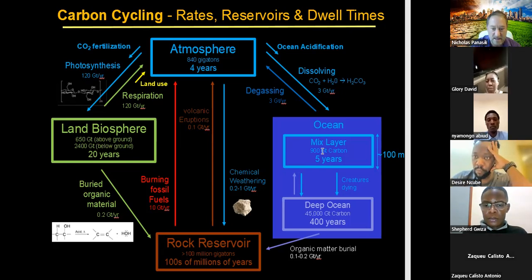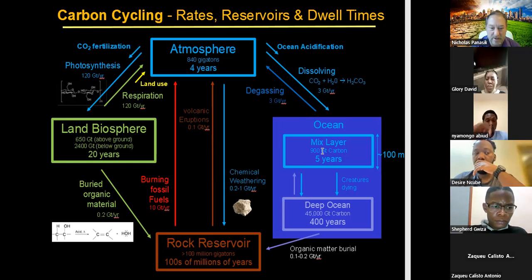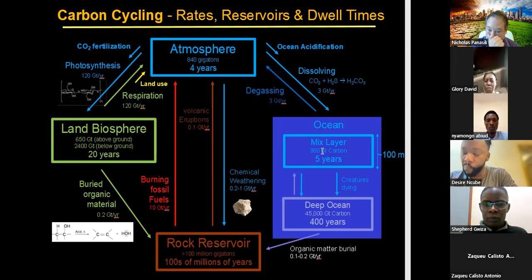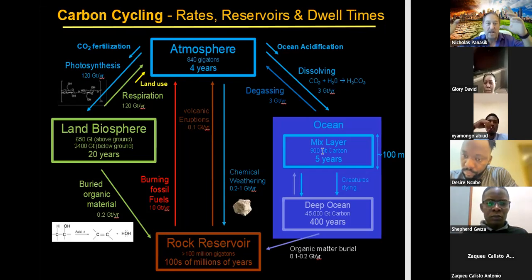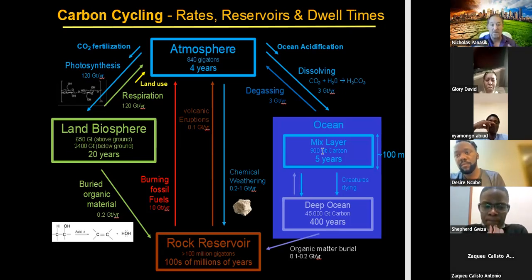That kind of dwarfs all the numbers we've talked about with the land biosphere and the atmosphere. And what dwarfs all of those is probably the rock reservoir — looking at carbon deep inside the earth and in rocks, we're talking over 100 million gigatons. Now, the amount of carbon going from the atmosphere to the land biosphere for photosynthesis is about 120 gigatons per year.